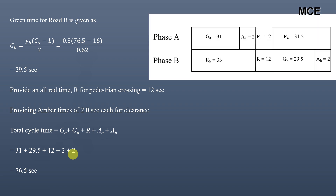You can see the diagram showing the green time, amber time, and red time for each phase. For phase A: green time plus amber time equals the red time for phase B. Similarly, green time for phase B plus amber time for phase B equals the red time for phase A. The all-red time is constant throughout, as during this period all signals show red — it is the 12-second pedestrian crossing interval.